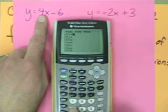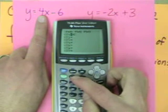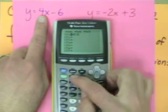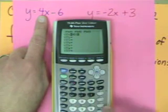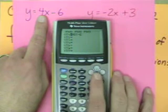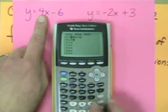So we're going to come in here, we're going to type 4, and then we're going to put the x. This is the x button right here. x minus 6.